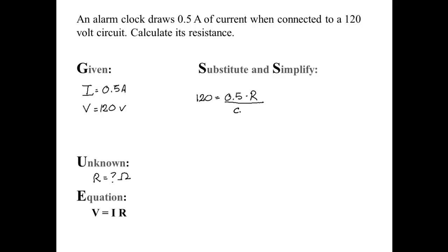In order to get resistance by itself on the right-hand side, I will divide by 0.5. Whatever I do to the right, I have to do to the left. And I get resistance equals 240 ohms.